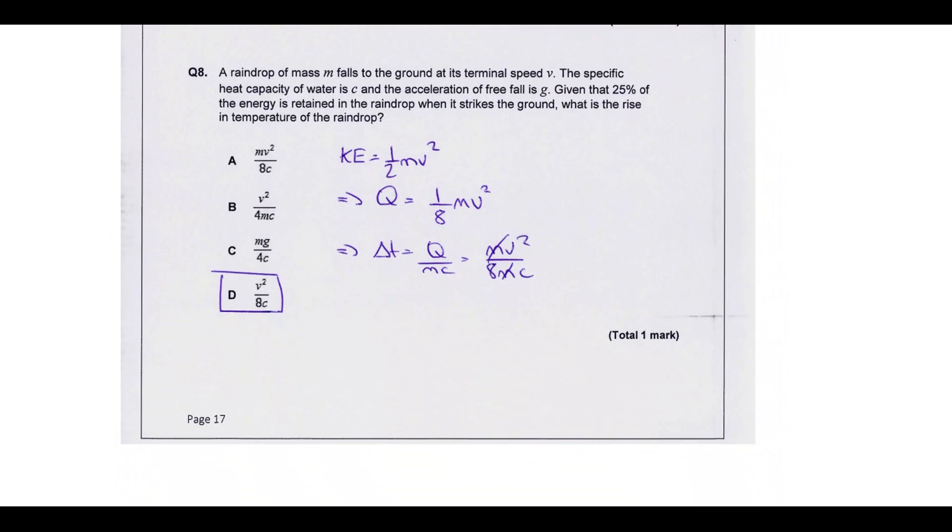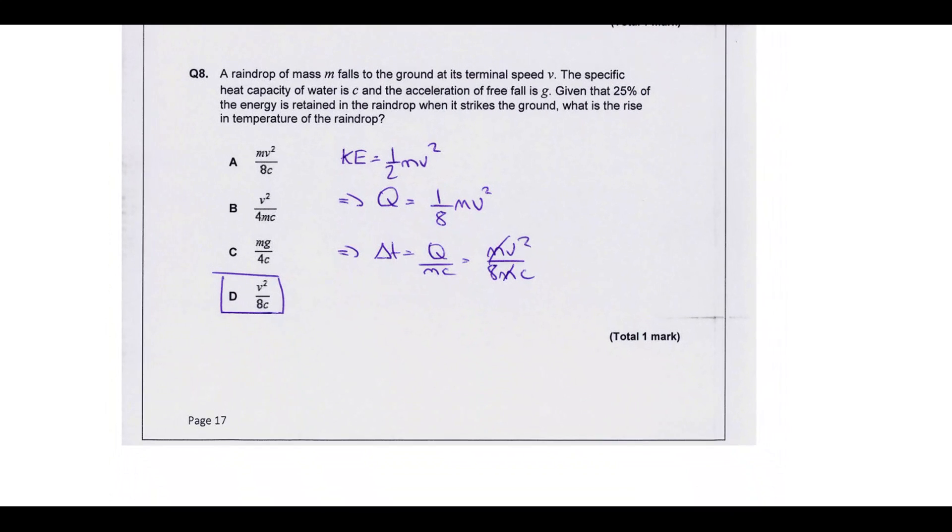A raindrop of mass M falls to the ground at its terminal speed V, and it keeps 25% of its energy when it strikes the ground. So that means 25% of its kinetic energy is retained as thermal energy. So what would the change in temperature be? This is how much heat energy is available - that's 25% of the kinetic energy. And then we know Q is equal to MC delta T, so delta T is equal to Q over MC. Putting those two together, we end up with this expression D here.